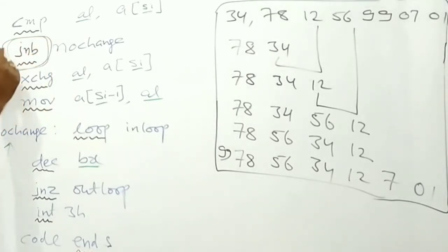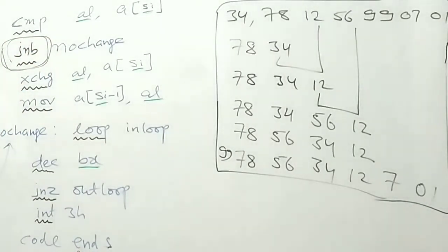This JNB bit or JB bit will decide whether the numbers are to be arranged in ascending order or in descending order.